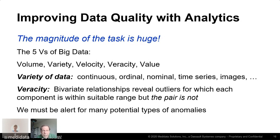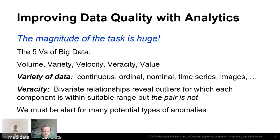Regarding the five V's of big data — volume, variety, velocity, veracity, and value — variety is relevant because we have many different kinds of variables in a clinical trial. And veracity is what this whole talk is about. If the data have errors, anomalies, and values that clearly aren't right, that's going to really sabotage our analysis.